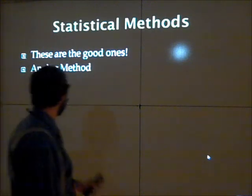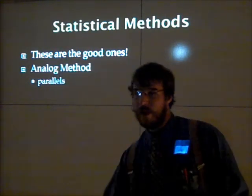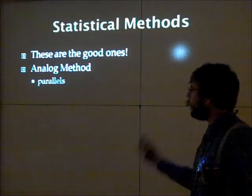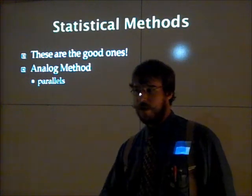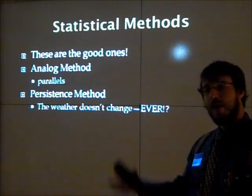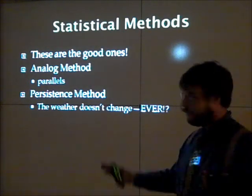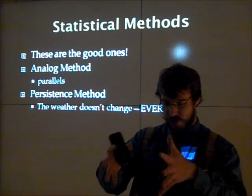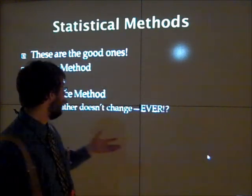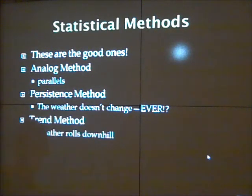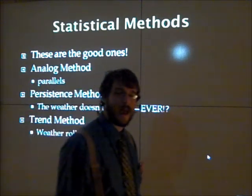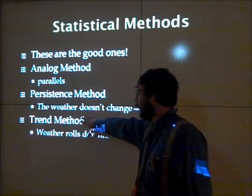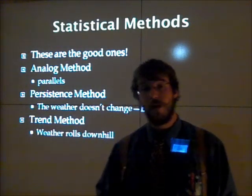Statistical forecasting is really good — it takes a blending of the models and everything else. There are more model links in the description. The analog method looks at what's happening now and runs it parallel to what happened in the past. The persistence method is the idea that whatever the weather is doing right now, it's going to keep doing — weather should stay relatively stable. Then there's the trend method, where you look at where the weather is and follow where it's moving. We're going to focus a lot on the trend method in class.